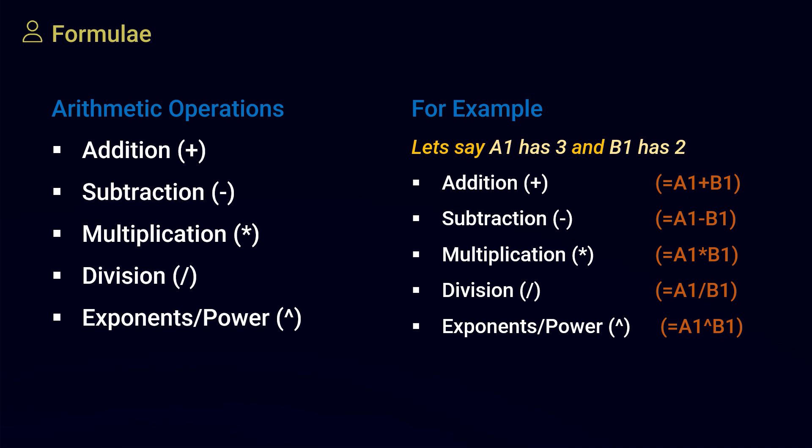When it comes to arithmetic formulas, there are five different types universally used: addition, subtraction, multiplication, division, and exponents. Exponents are lesser in usage but still an important arithmetic operation. Addition is represented by plus, subtraction by minus, multiplication by star (asterisk), and division by a slash.